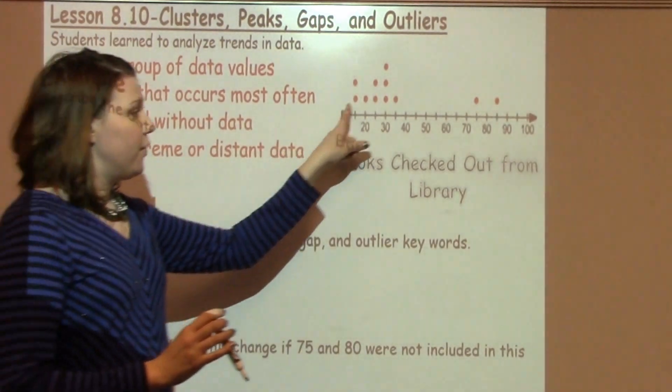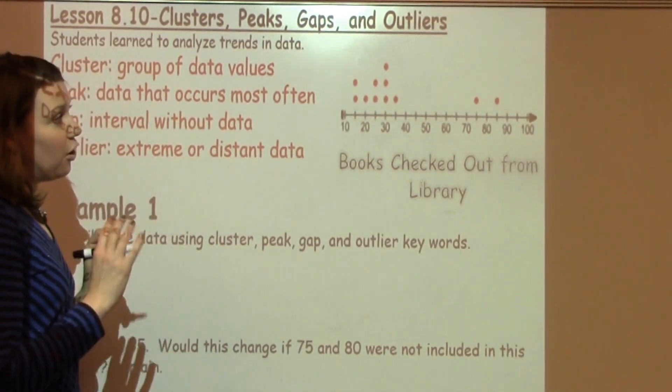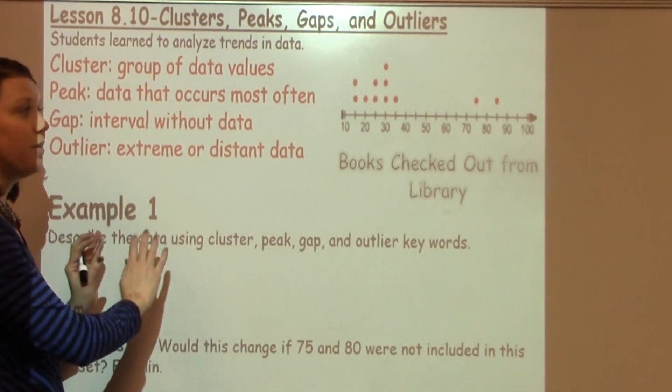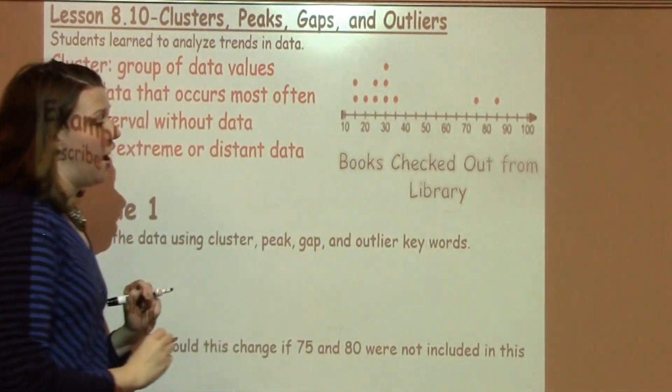Looking at this dot plot over here, we can see the books checked out from the library. We can see some different things here as we look at the data. Let's go ahead and look at question number one as we begin to think about how these terms are going to apply to this dot plot.